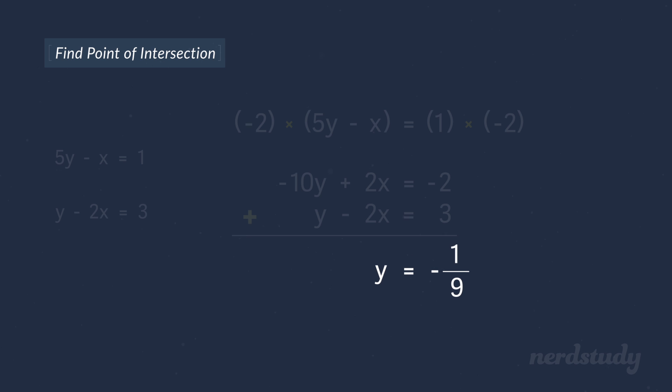Alright, so we can use this y equals negative 1 over 9 to plug it back into our two original equations. And if we get the same x value, then of course, we can confirm that we found our solution. So the first equation becomes negative 1 over 9 minus 2x equals 3.